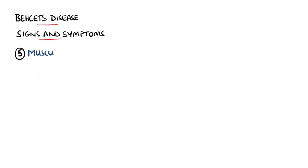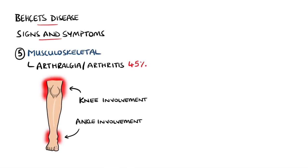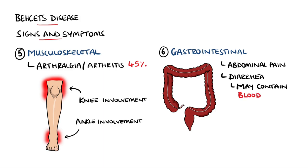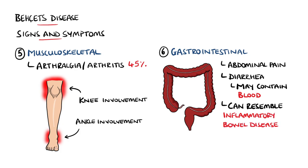In around 45% of cases, there can be arthralgia or arthritis, mostly affecting the knees and ankles. Behçet's disease can also affect the gastrointestinal system, causing abdominal pain and diarrhoea, which may include blood. This, combined with ocular and joint involvement, can make it difficult to distinguish from inflammatory bowel disease. Behçet's most commonly affects the ileocecal region and can also affect the ascending and transverse colon in particular.